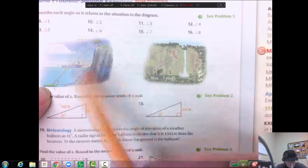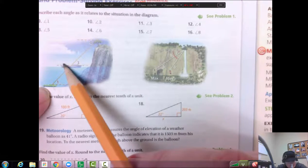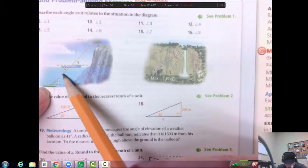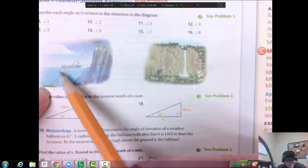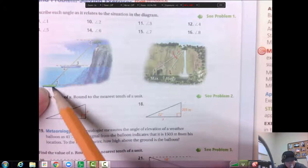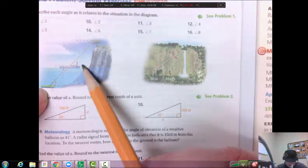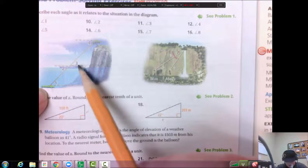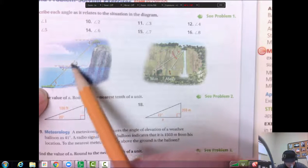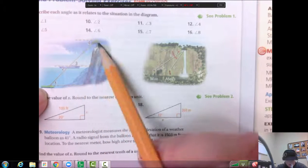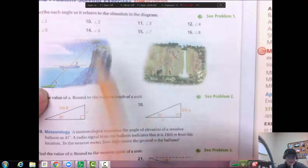So problem ten says what about angle two? Well this one's down, right? So this is an angle of depression, and you're going from the boat to the submarine. Okay, so question eleven asks about three. And this one is an elevation also because we're going up from the boat to the tree. Okay, so you get the kind of idea.